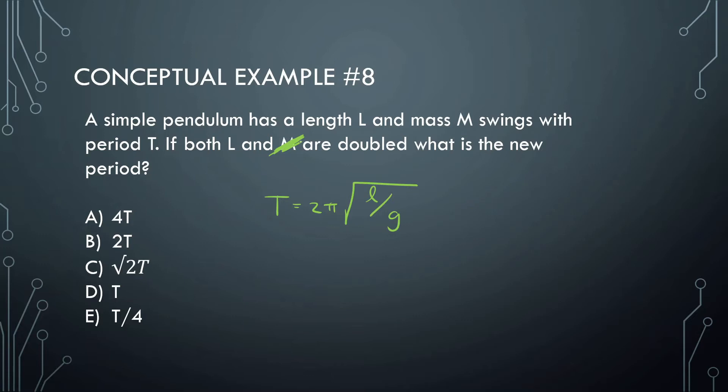Mass shouldn't matter for pendulums. The reason for that is because gravity acts on all objects the same. So whether an object is very heavy or very light, the mass doesn't affect it. That being the case, we're going to see that the length does double and that does matter in this equation. If this doubles, we should notice that this changes by a factor of square root of 2. The answer should be C. It increases.